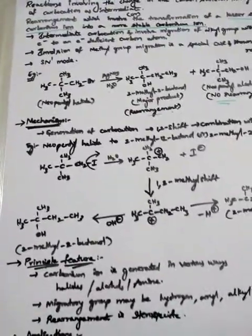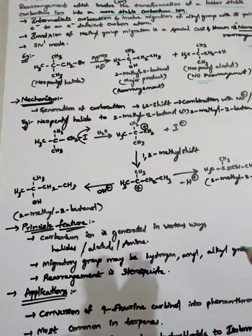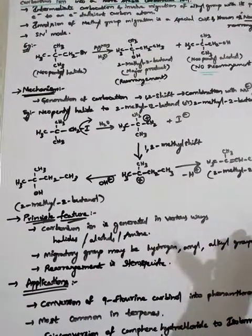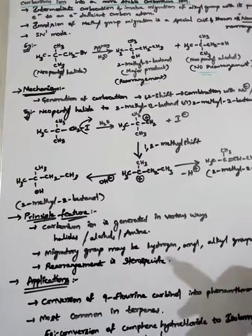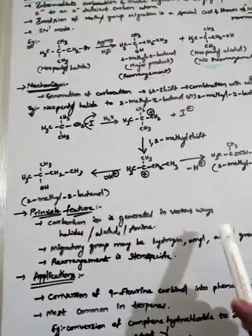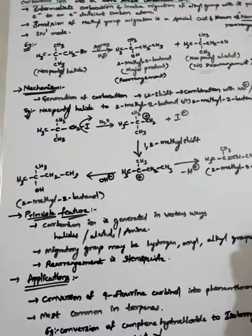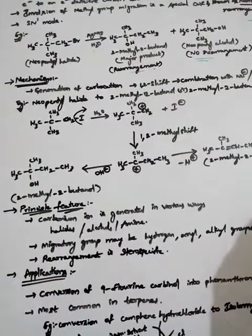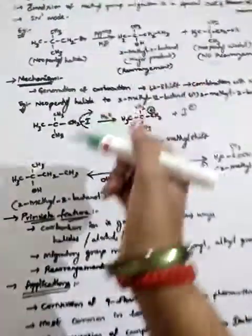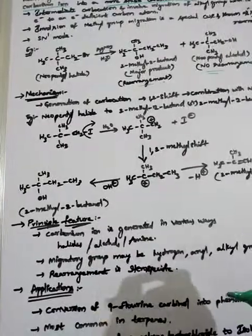This reaction takes place via the SN1 mechanism. SN1 is a nucleophilic substitution reaction that proceeds through a carbocation intermediate, is a first-order reaction, and is unimolecular. SN2 is also a nucleophilic substitution reaction but involves two steps and is bimolecular.